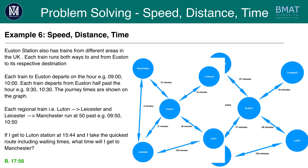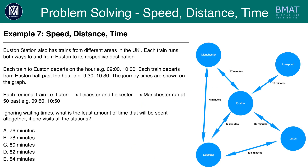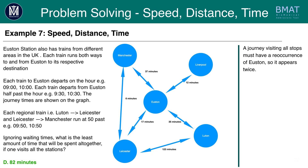Have a go at this question now. The answer you should have gotten for this question is D, 82 minutes. A journey visiting all the stops must have a reoccurrence at Euston, so Euston will end up appearing twice in the journey. The shortest journey involving Euston twice means you may as well use Euston to Liverpool twice.